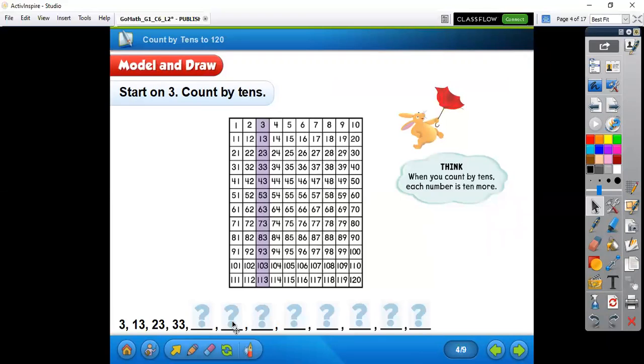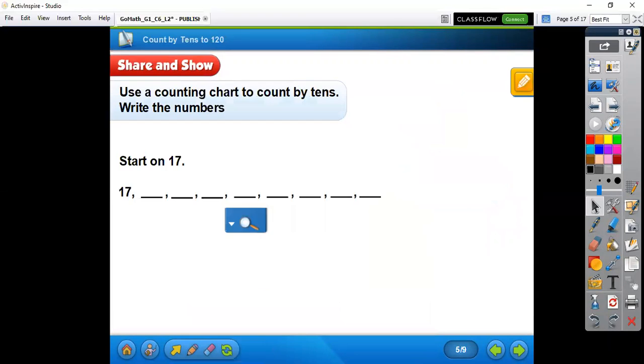So here you would just write the next number, so you would avoid 43, 53, and so on. Good job. Now we're not going to use our hundreds chart, but it follows the same method.